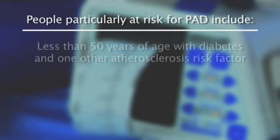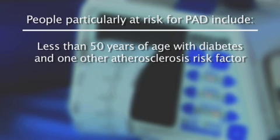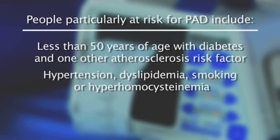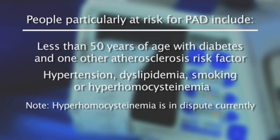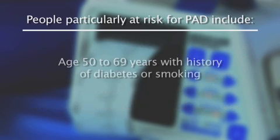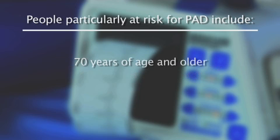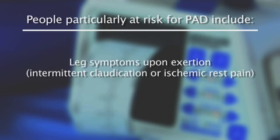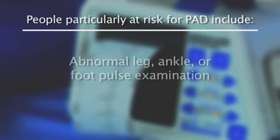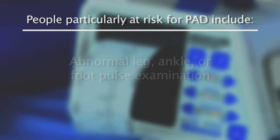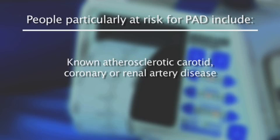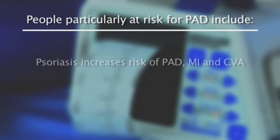People particularly at risk for PAD include those less than 50 years of age with diabetes and one other atherosclerosis risk factor — hypertension, dyslipidemia, smoking, or hyperhomocystinemia. Note: hyperhomocystinemia is currently in dispute. Age 50 to 69 years with history of diabetes or smoking. Seventy years of age and older. Leg symptoms upon exertion, intermittent claudication or ischemic rest pain. Abnormal leg, ankle, or foot pulse examination. Known atherosclerotic, carotid, coronary, or renal artery disease. Psoriasis increases risk of PAD, MI, and CVA.